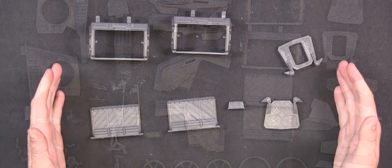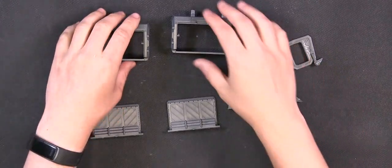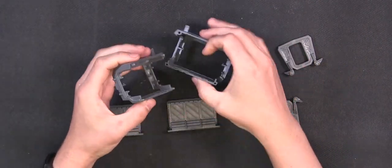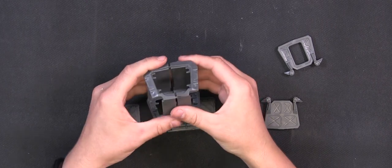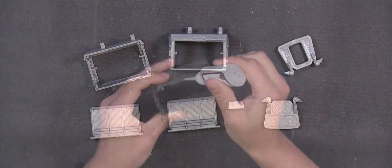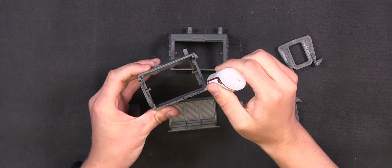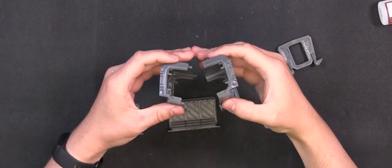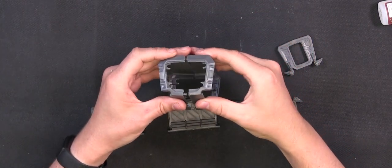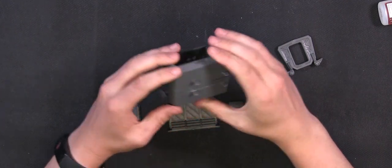Okay so first off we are going to build the transportation hold. These two bits go together like so. Again as I'm sure you've heard me on all these videos, always worth dry fitting everything first just so you can see if there's any snags, any bits of flash that you may have missed.